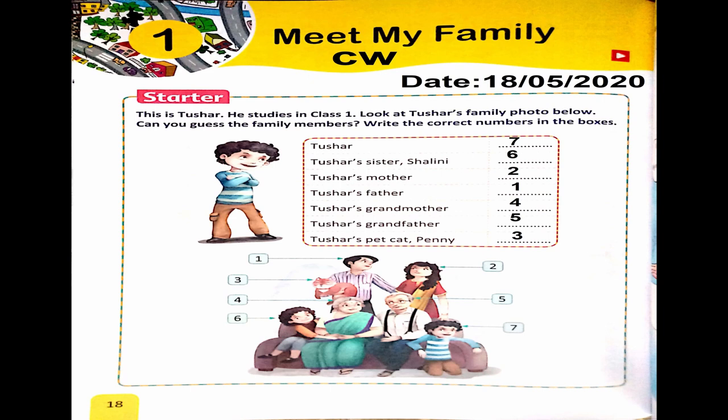Look at Tushar's family photo below. You have to look at it carefully and guess the family members, then write the correct numbers in the boxes. Tushar is sitting beside his grandfather — Tushar's number is 7, so you will put number 7.